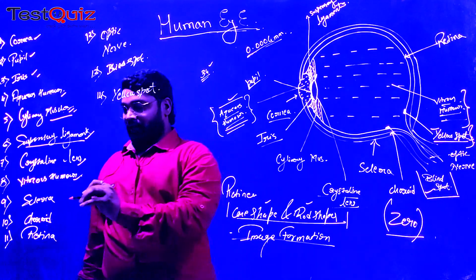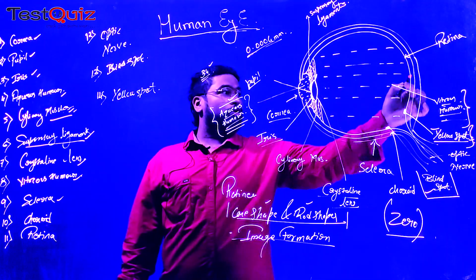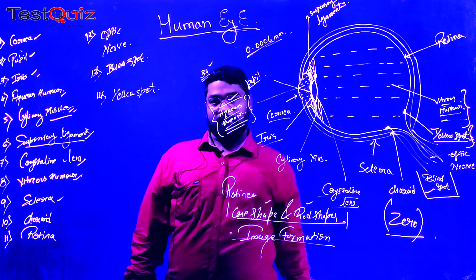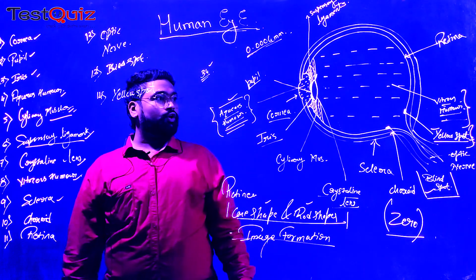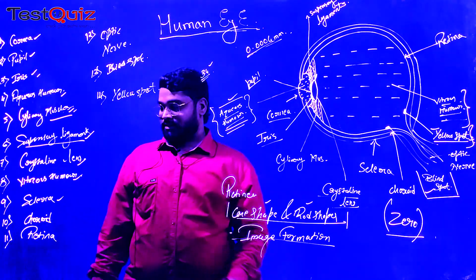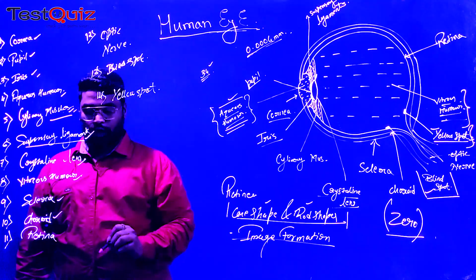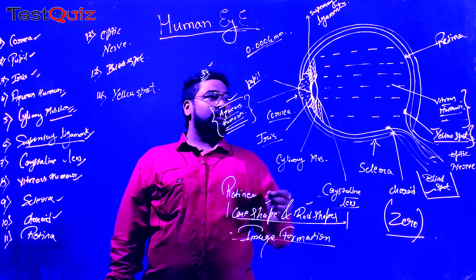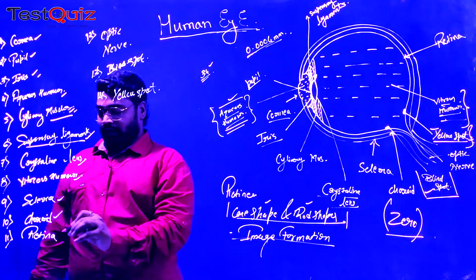Next we have the sclera. The sclera is the outermost layer of the human eye, which gives a complete solid structure. Next, we have the choroid — a set of intermediate layer between the sclera and the retina.